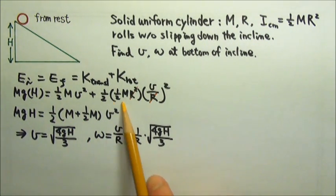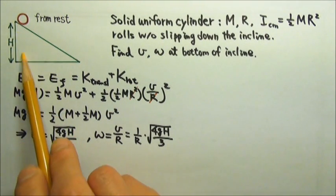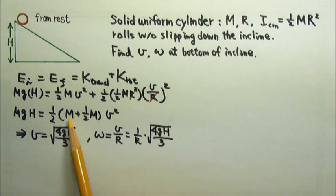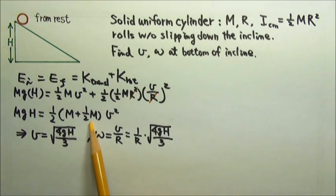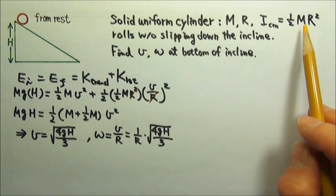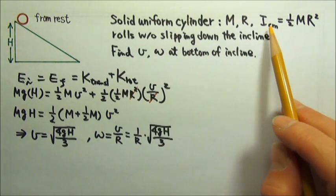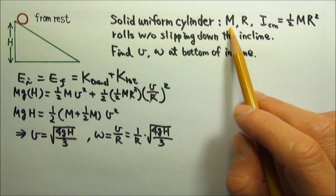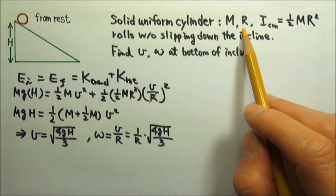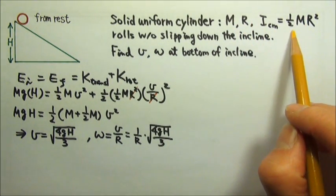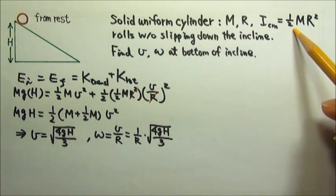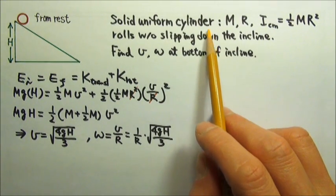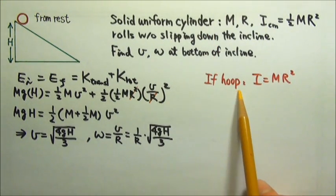What it does depend on is this extra number here. This here happens to look very much like the mgh is turning into 1/2 mv². And here you have m plus half m. And this part comes from that part of the rotational inertia. Again, if this is the hoop,